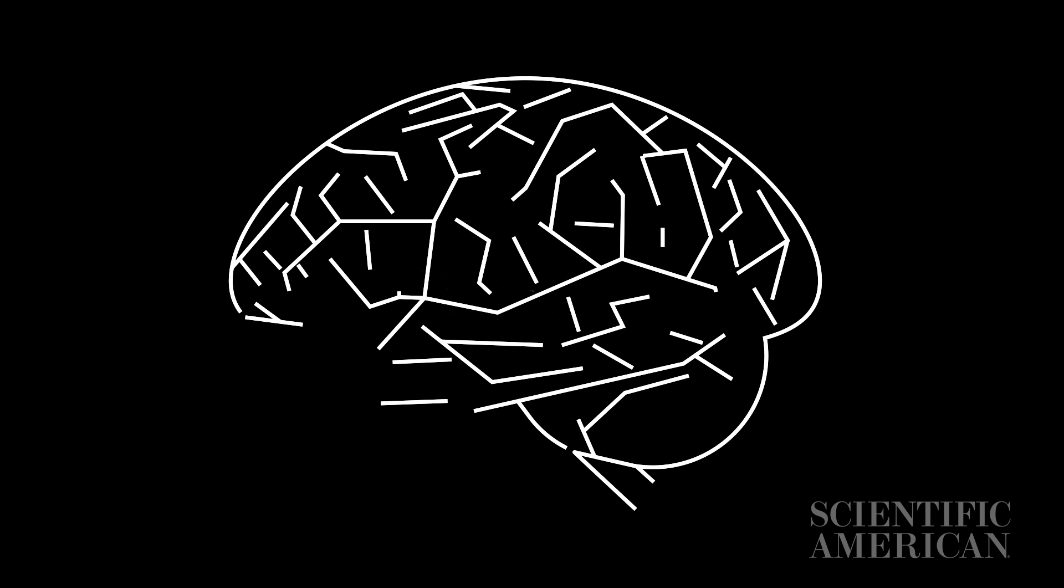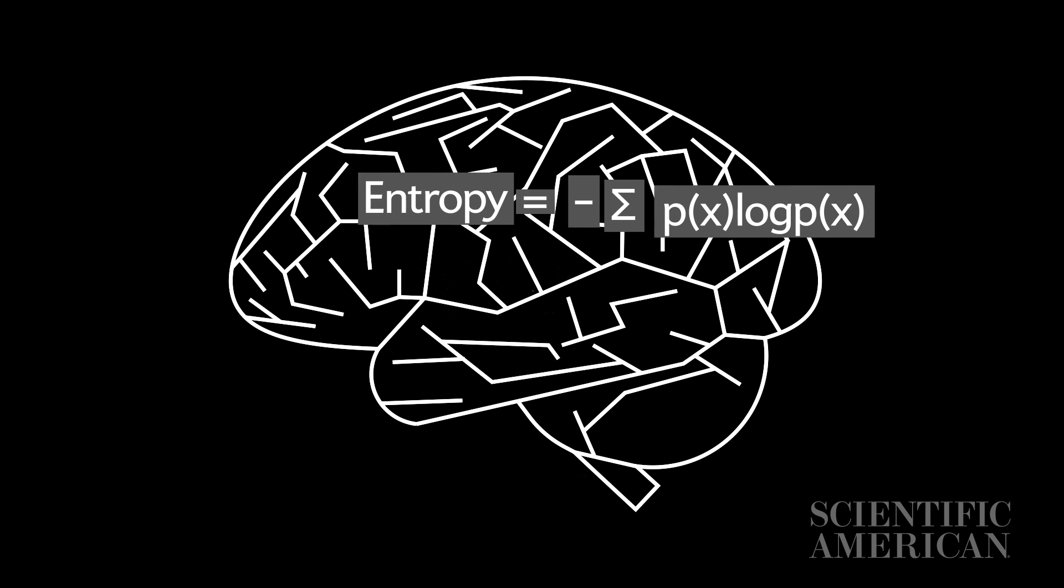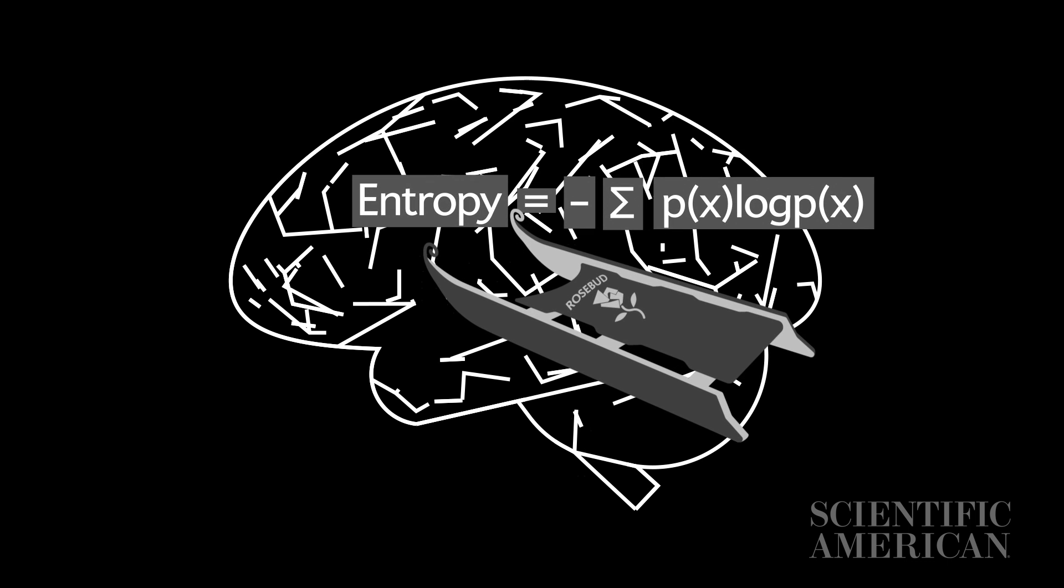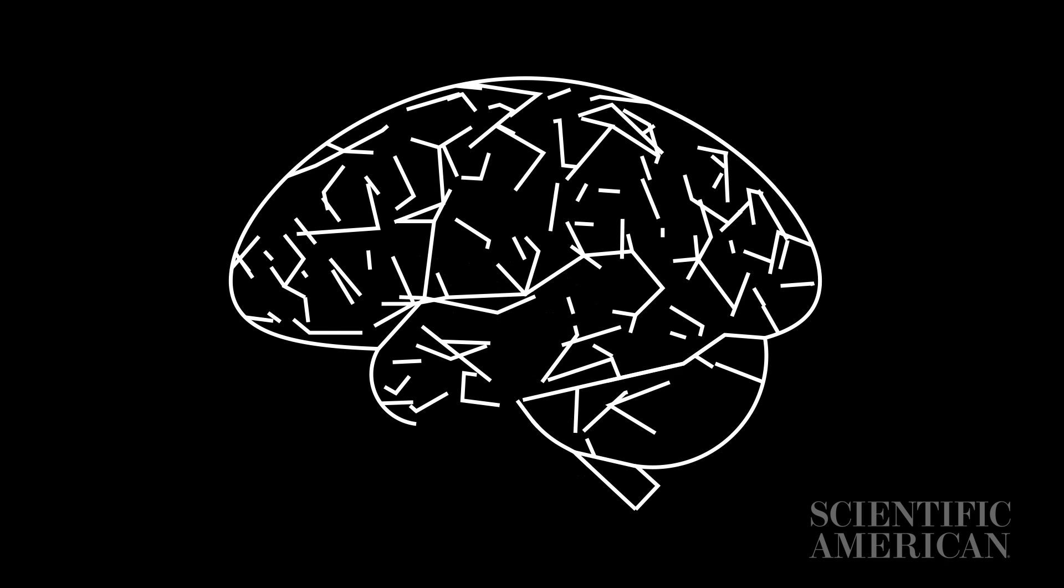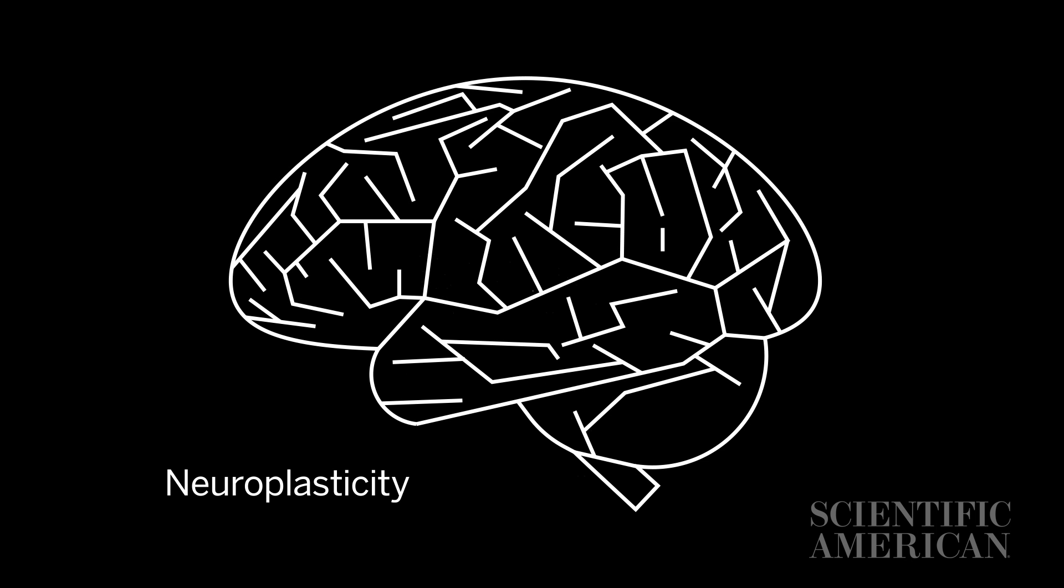This happens all the time, all across the brain, and it explains how we learn and form memories. We literally rewire our brains through our experiences. We call the brain's fundamental ability to change in this way neuroplasticity.